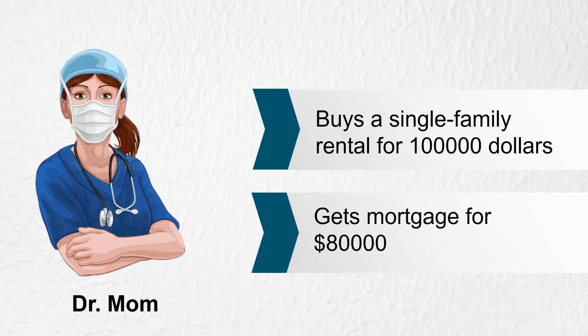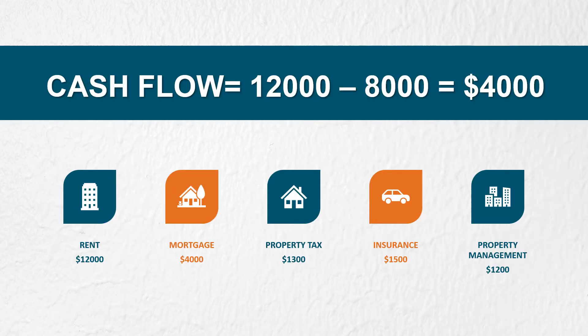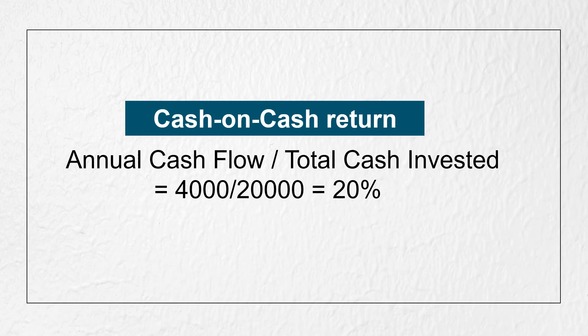Let's see what happens when she uses leverage. She buys the same property for $100,000, but this time she gets a mortgage from the bank for $80,000 and puts $20,000 of her own money. Now she has an additional expense of $4,000 for the mortgage payment. Therefore, her cash flow is $4,000 per year, which is less than if she had bought the property with cash. Even though she had only $4,000 of cash flow, she put in only $20,000. Now her cash on cash return is 20% instead of 8% with a full cash purchase.